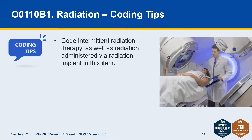Now, a tip for radiation — O0110B1. For this item, you would code intermittent radiation therapy as well as radiation administered through a radiation implant. One example of this might be prostate implants.